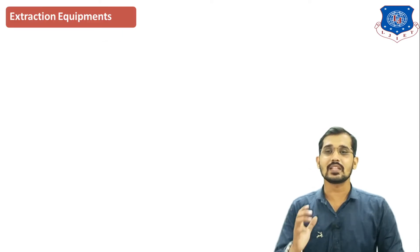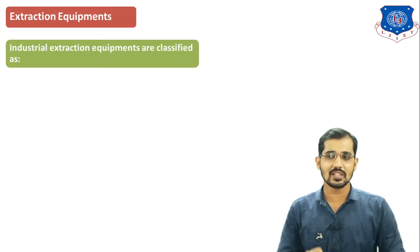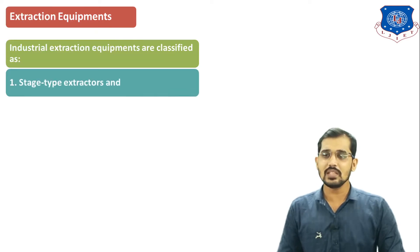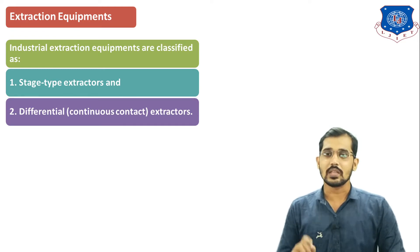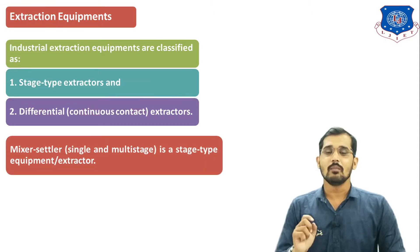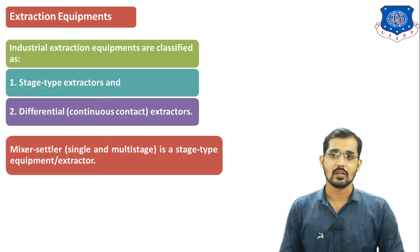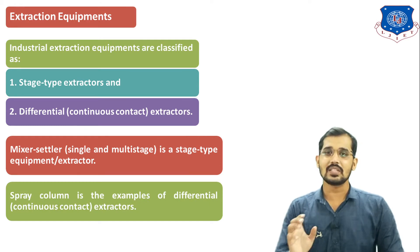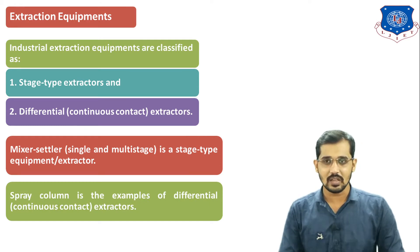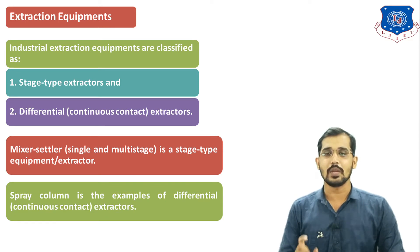Now we will see various extraction equipments used in industry. Industrial Extraction Equipments are classified as follows: the first one is Stage-Type Extractors and the second one is Differential or Continuous Contact Extractors. An example for Stage-Type Extractors is the Mixer-Settler, which is a Multi-Stage or Single-Stage Extractor. An example for Differential or Continuous Contact Extractors is the Spray Column.